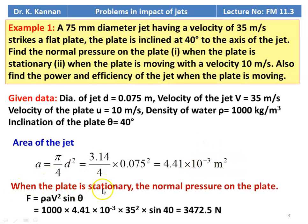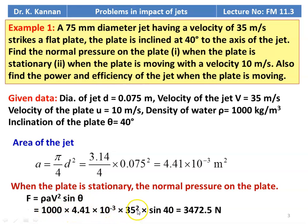When the plate is stationary, the normal pressure on the plate F = rho × A × V² × sin(theta) = 1000 × 4.41 × 10⁻³ × 35² × sin(40°) = 3472.5 N.